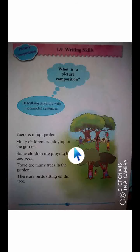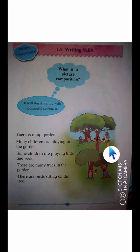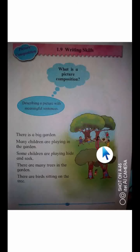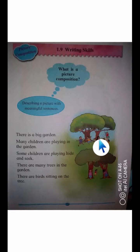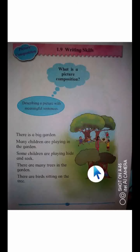Two children are playing and running, and birds are on the trees. One boy is doing painting, and one woman is there — she will be the teacher of this boy. The boy is showing the painting to his teacher. One girl is sitting on the swing and swinging.